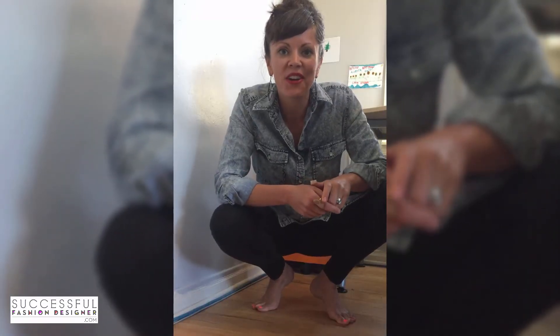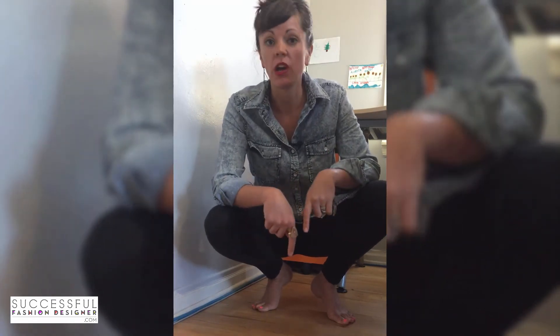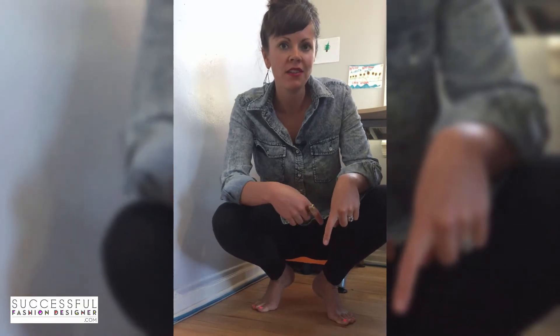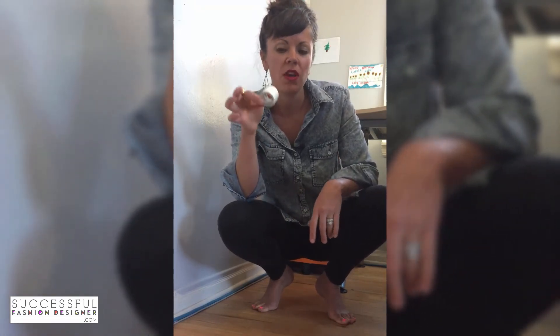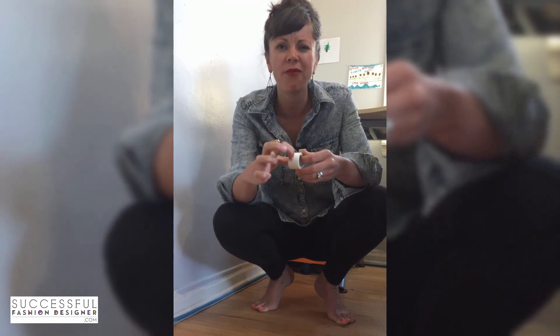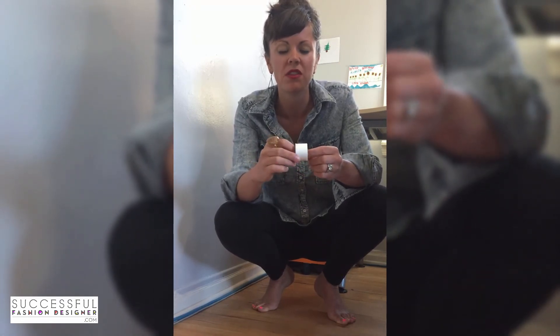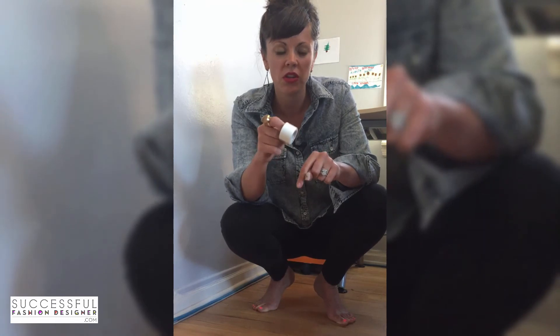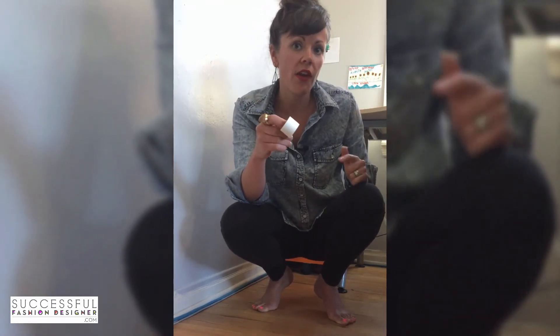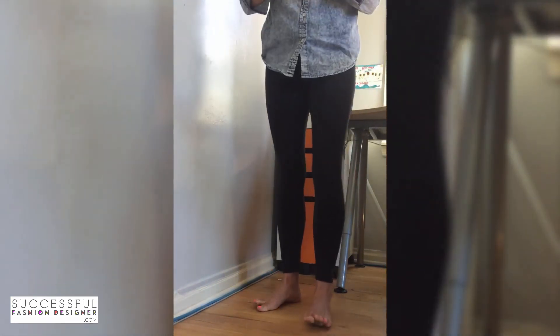Now let's put on a pair of leggings and mock this up in real life. You can do this on yourself, on a garment laying flat, on a dress form, or on a friend. For this demonstration I put on a pair of black leggings, and I'm going to mark where I think some of these seam and style lines should go using a roll of white medical tape. I'll just put a piece there to mock up where I think it might look good for that panel to be.